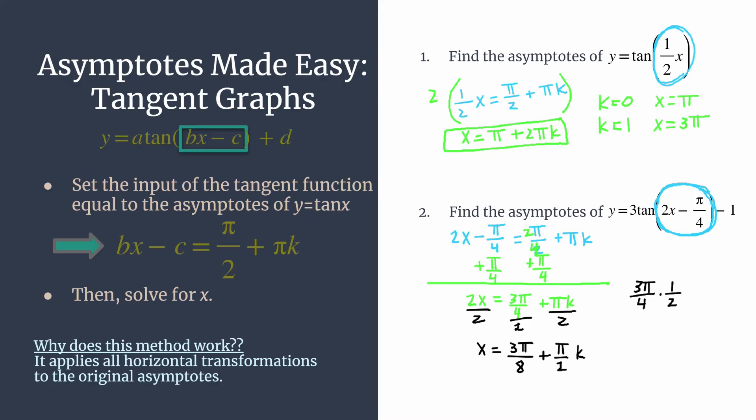And again, if you wanted to find the particular asymptotes, you could do that. This equation will generate all of them for you, and you just simply plug in integers for k. So you can see the first positive asymptote would be when k is zero, and your asymptote would just be at three pi over eight.